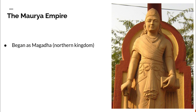A ruler named Chandragupta Maurya took advantage of this and invaded the weakened northern kingdoms of India, conquering them. He eventually conquered much of the subcontinent of India, uniting it under one single empire. Chandragupta is credited for uniting all these small kingdoms into one single empire that spanned the entire subcontinent.